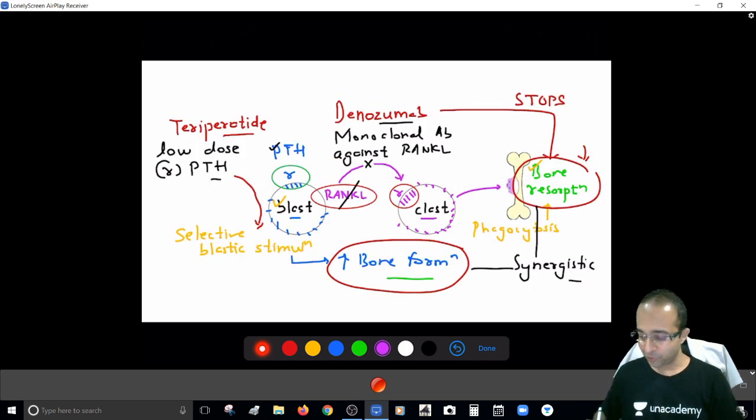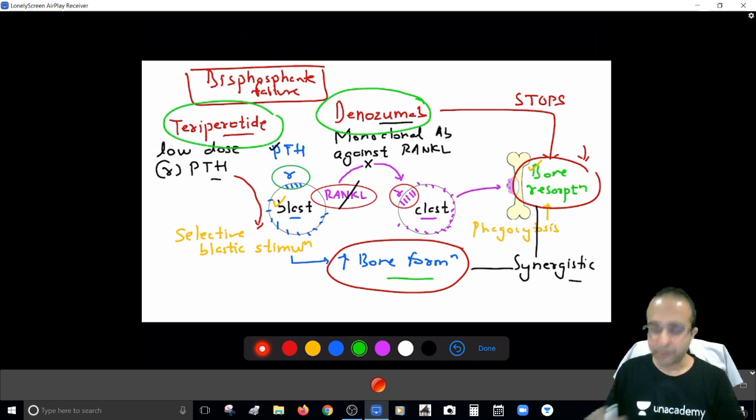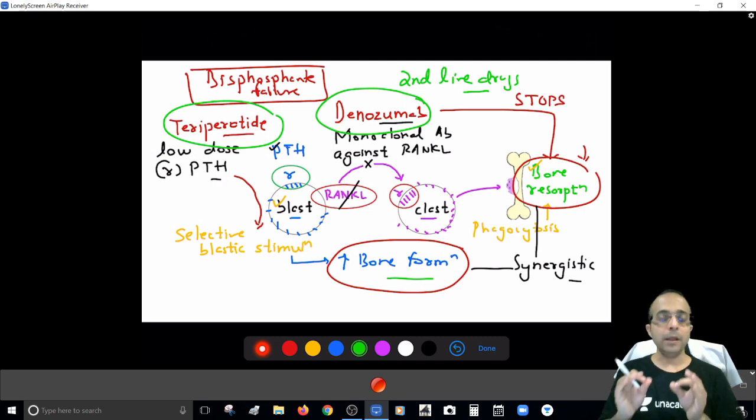So when this becomes the situation, you are having osteoporosis and there is bisphosphonate failure, this is the scenario where you move to Teriparatide or Denosumab. So I mean to say, the Teriparatide and Denosumab, they are not the first-line drugs. They are the second-line drugs for osteoporosis. And they are specifically to be used when you have documented a bisphosphonate failure. Maybe side effects to bisphosphonates, maybe a failure of bisphosphonate therapy.